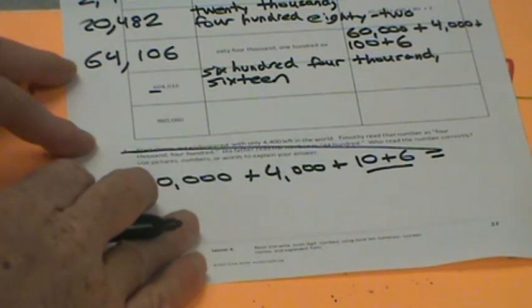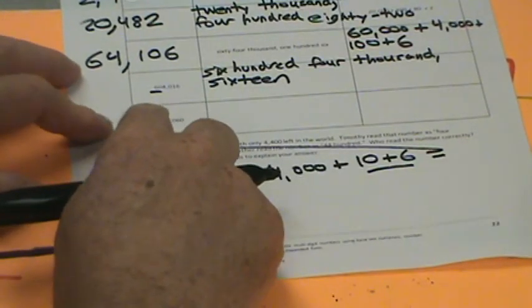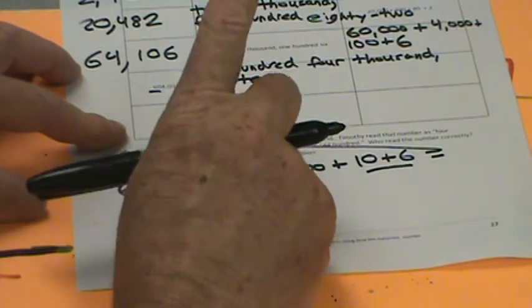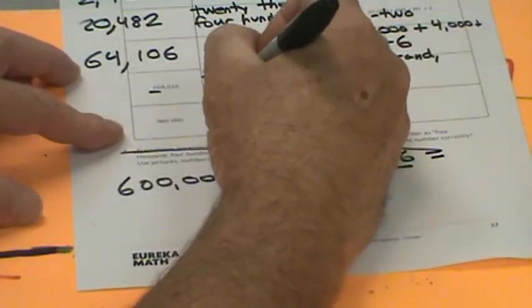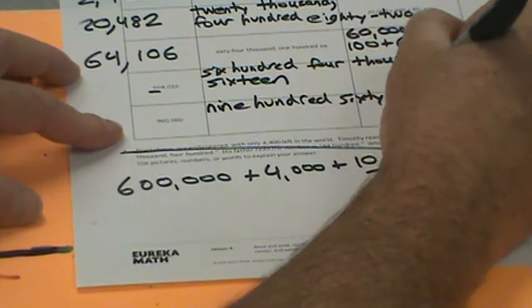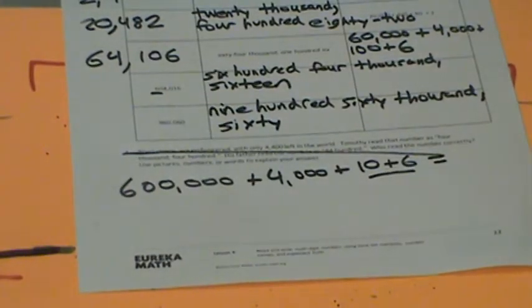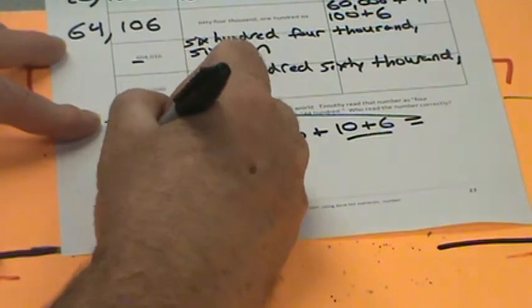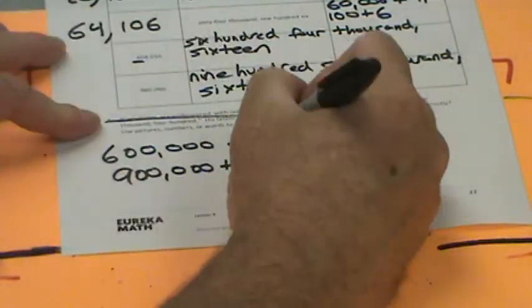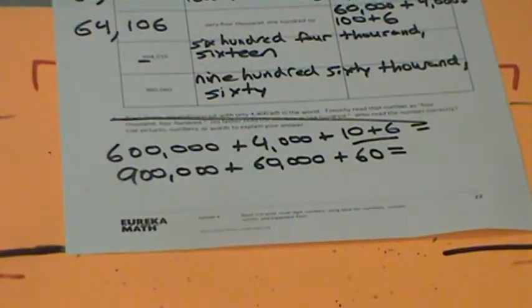Our very last one's also in standard form: 960,060. Notice I didn't say the word 'and'. Let's write this in word form: nine hundred sixty thousand, sixty. Now, behold, as we enter the realm of expanded form: 900,000, we're going to add 60,000, and then we're going to add a little 60 here. So there you have it, problem set lesson four. We're moving right along this year.